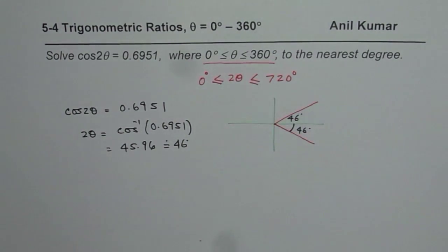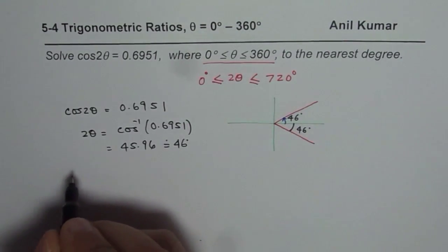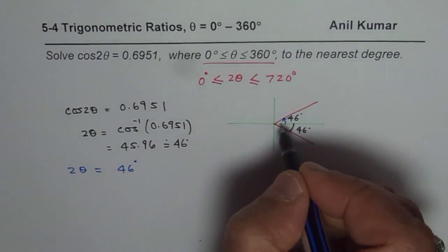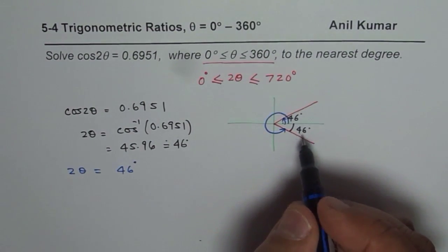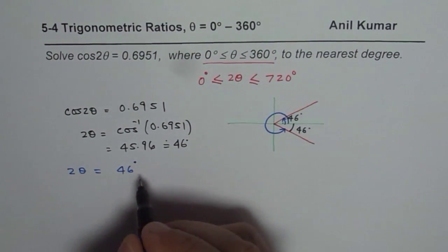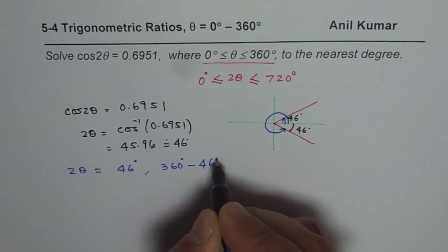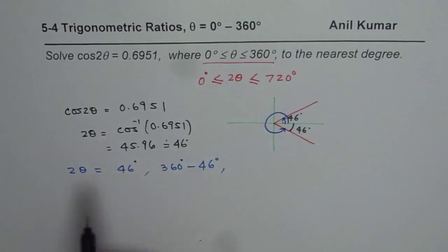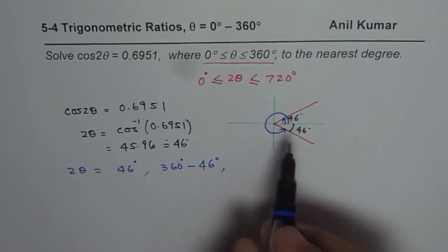So we get two answers. The first one is 2θ equals 46 degrees. The second one is 360 minus 46. Second one is 360 degrees minus 46. So that is the second answer. Now remember 2θ is within 0 to 720. So we should add 360 to these to get two more answers.